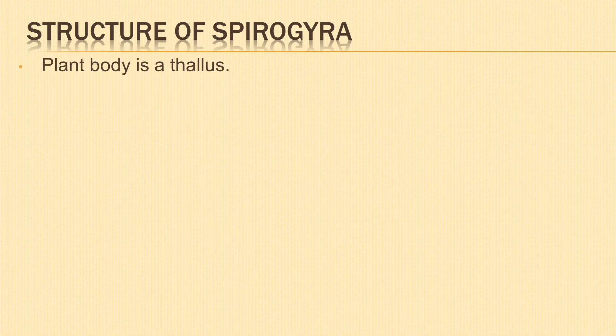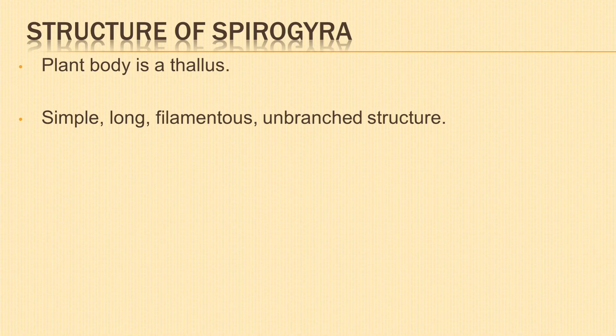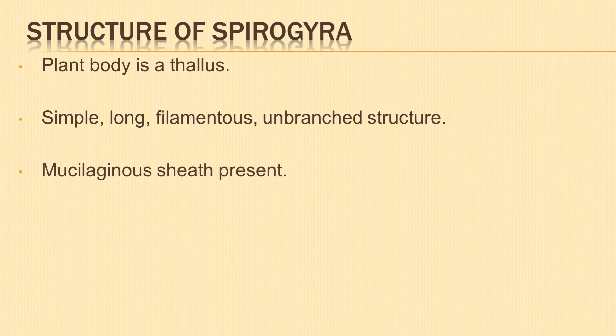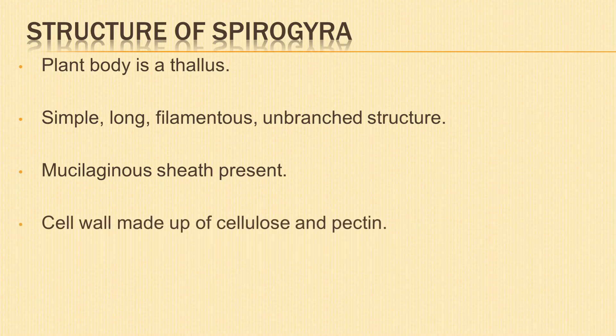Next, we shall study about the structure of Spirogyra. The plant body of Spirogyra is called a thallus. It is a simple, long, filamentous, unbranched structure made up of a single row of cylindrical cells arranged one above the other. The filaments are covered by a layer of slippery mucilaginous sheath. The slimy sheath is due to the dissociation of pectin in water. The cell wall is made up of inner cellulose and outer pectin.